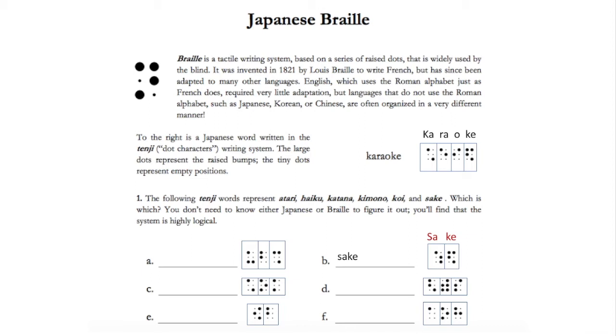We can also figure out katana, as karaoke begins the same way as katana. And the only one that matches again is c. And we can also figure out the syllables for ka, ta, and na.